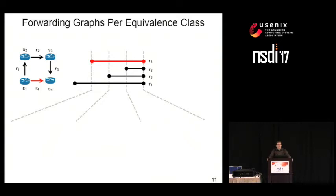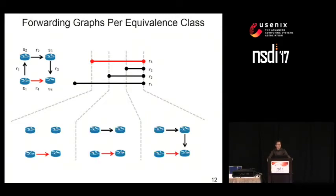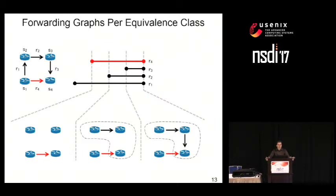What happens in tools such as Veriflow is that they partition the set of IP prefixes based on the endpoints of the corresponding intervals. We get equivalence classes of packets delineated by vertical dashed lines. For each equivalence class, Veriflow and similar tools create a forwarding graph showing how packets in that sub-range of IP addresses behave. In this example, we get three such forwarding graphs — one for each equivalence class — and it is possible to check for forwarding loops by standard graph algorithms on these graphs.